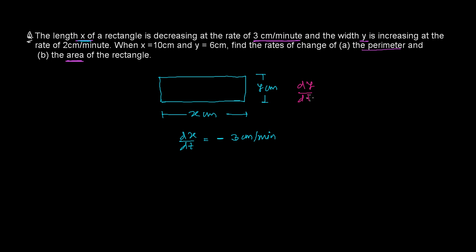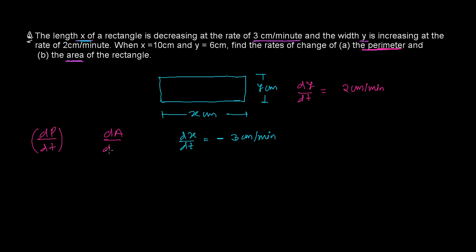dy over dt is positive, 2 cm per minute — the breadth is increasing. So now we need to find out what is the rate of change of perimeter, dp over dt, and what is the rate of change of area, dA over dt.